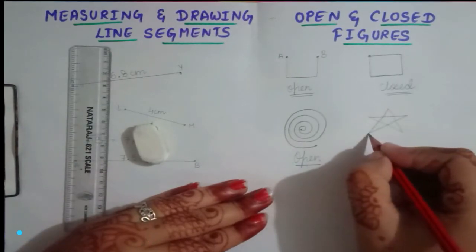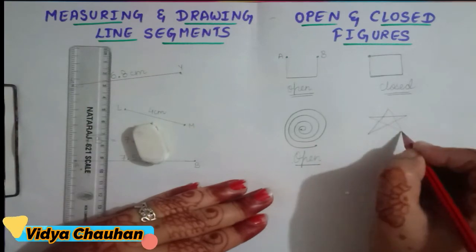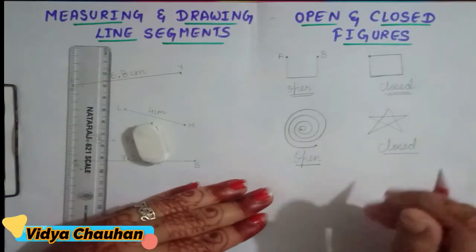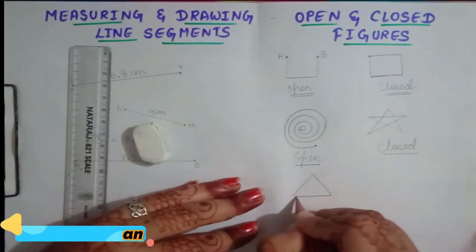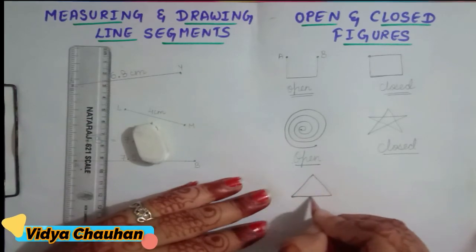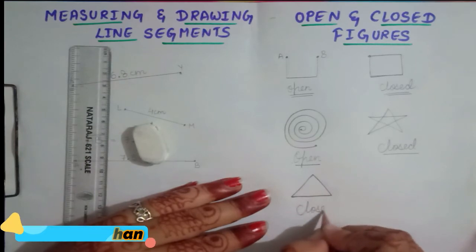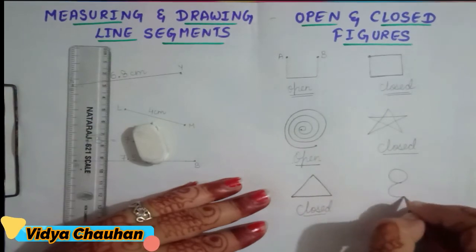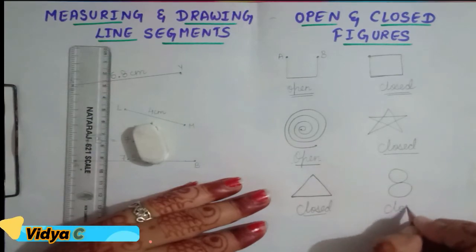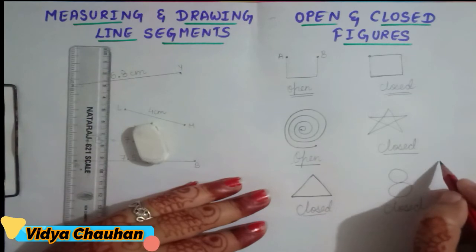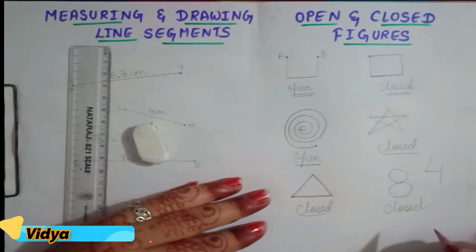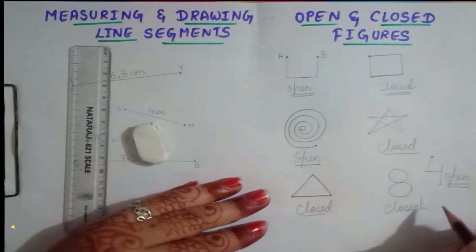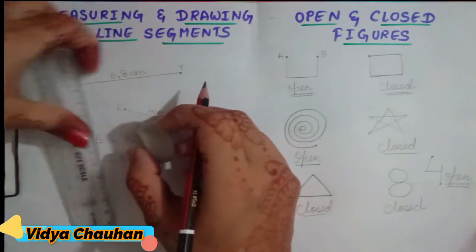If the starting point goes through a triangle shape and comes back to the same point, it is a closed figure. A triangle is a closed figure because the point at which we started is where we end. The number 8 shape is also a closed figure, while the number 4 is an open figure because it starts from one point and ends at another.